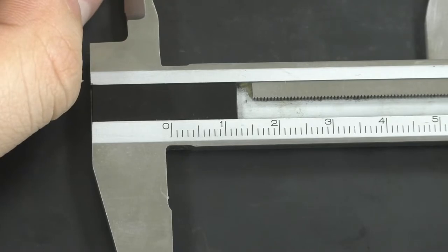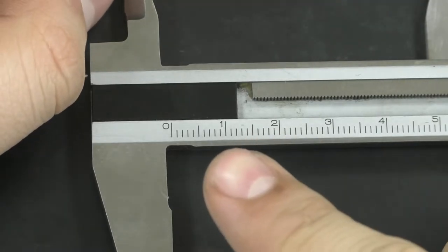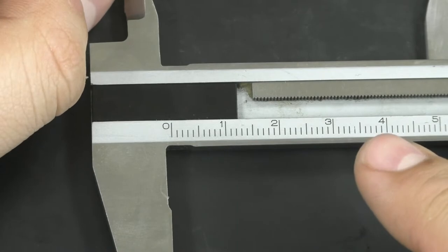On the shaft of the caliper, you will see a ruler. The numbers on the ruler represent centimeters, while each tick in between represents one-tenth of a centimeter, or one millimeter.